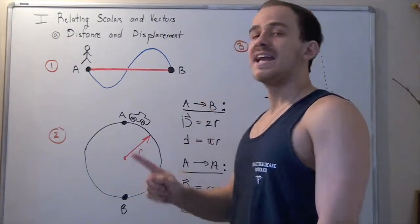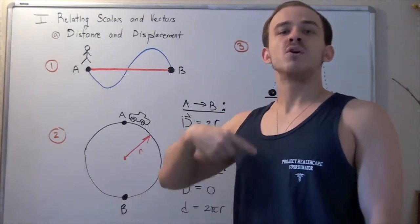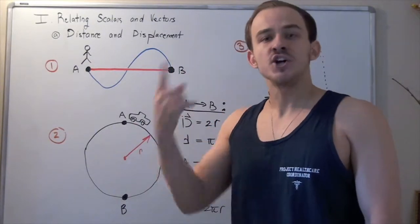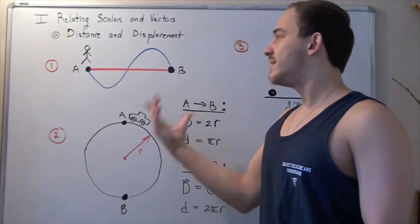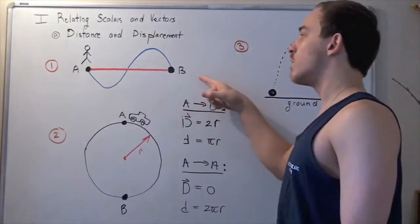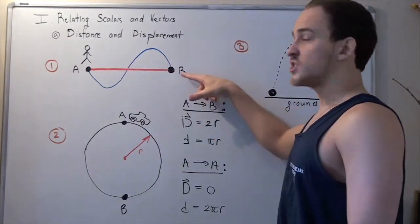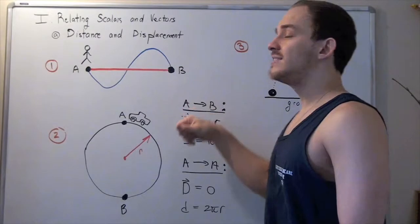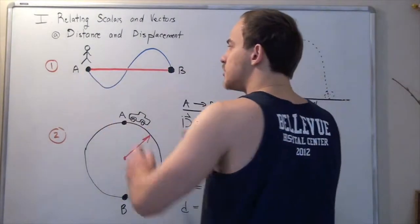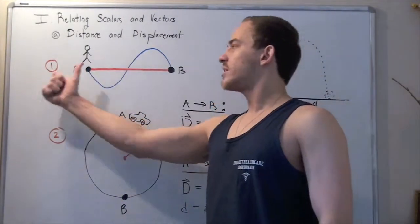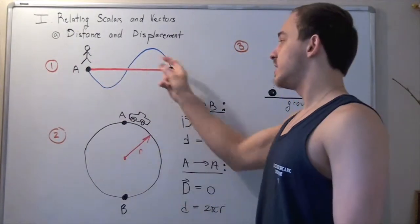The displacement, however, is not the actual pathway taken, but the most direct pathway that the person could have taken to get from point A to point B. In this case, it's a straight line going from A to B. It's a vector, so it has both magnitude and direction. In this case, our displacement is less than our distance.